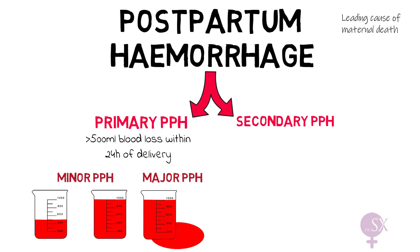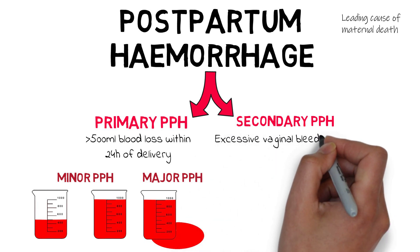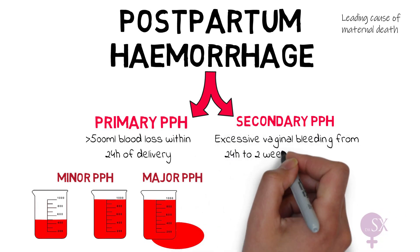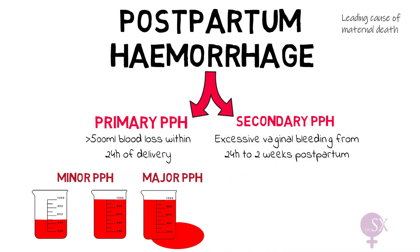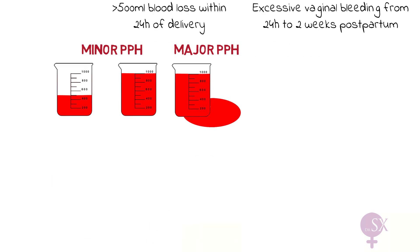An important note is that it is virtually impossible to measure the blood loss occurring after delivery, but we tend to assume that if blood has fallen onto the floor, you can assume that you have a major PPH on your hands. Secondary PPH refers to bleeding occurring from 24 hours to two weeks after delivery.